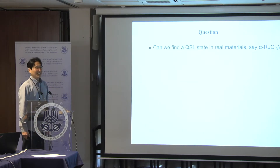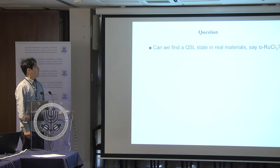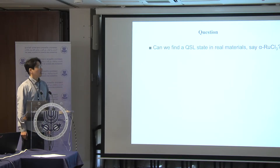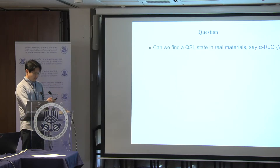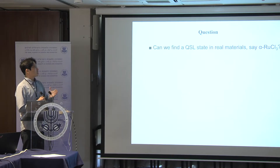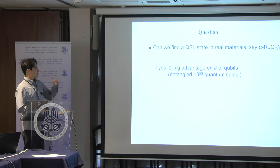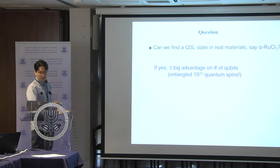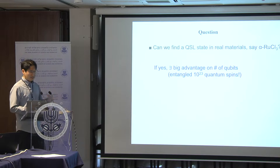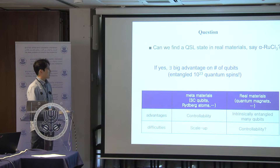One of the most important questions is: can you find a quantum spin liquid state in real materials, say alpha-RuCl3? This question is quite interesting because if the answer is yes, we can use quantum entanglement of many-body systems a lot. In real material we have lots of particles, and if we can find quantum spin liquid in such materials, lots of quantum spins are entangled. We can compare advantages and difficulties between metamaterials and real materials — scale-up is very difficult for metamaterials, while controllability is the big issue for real materials.